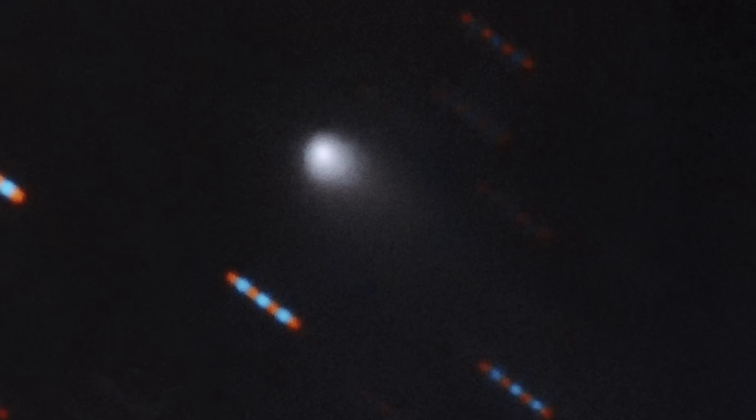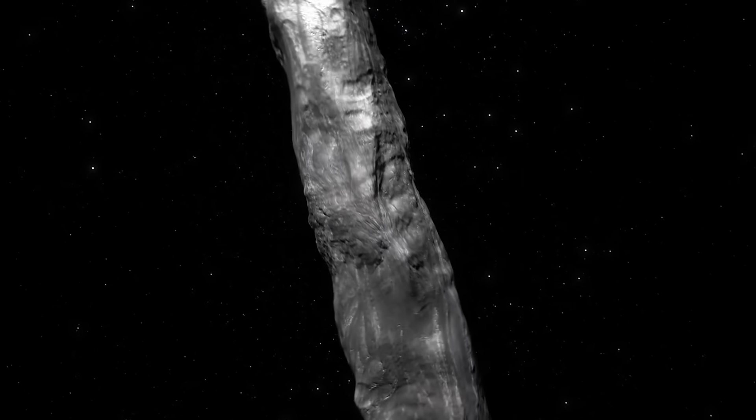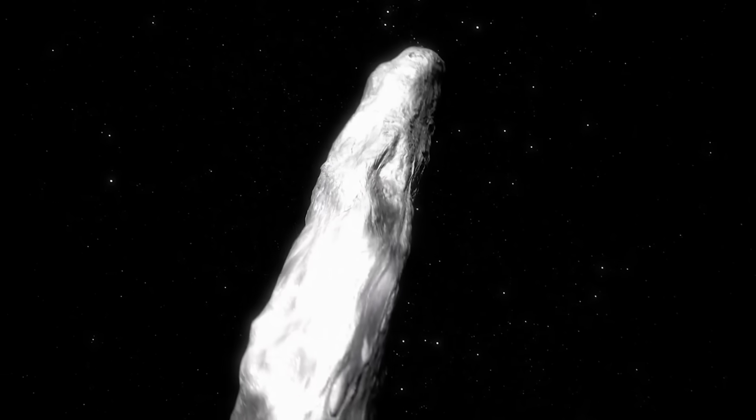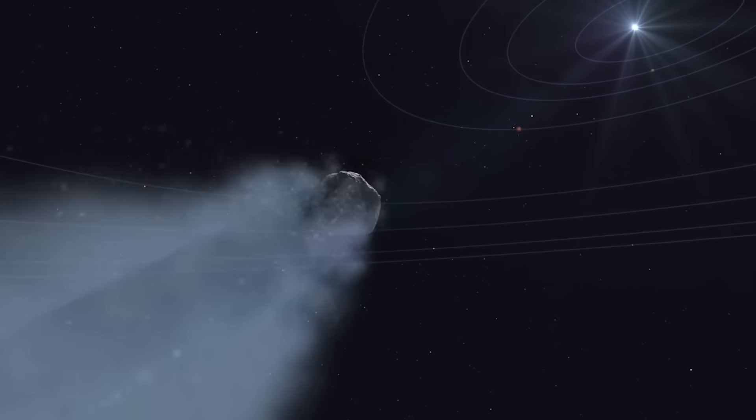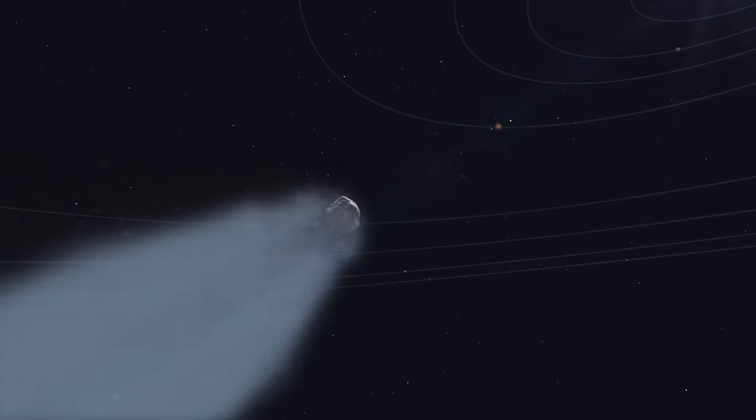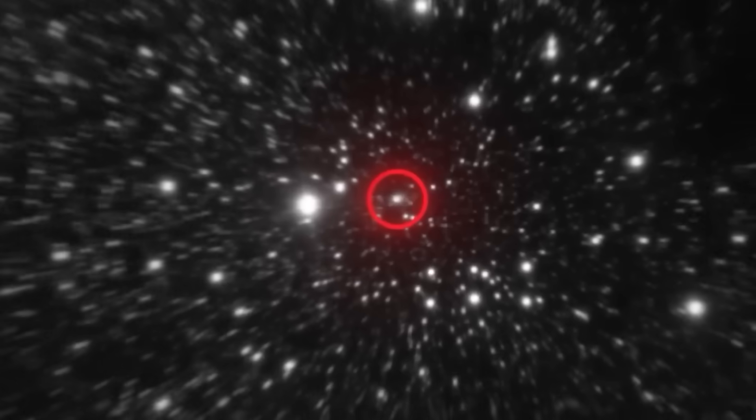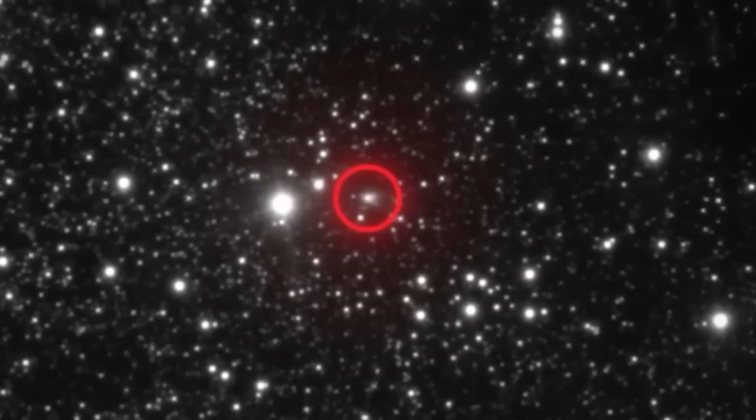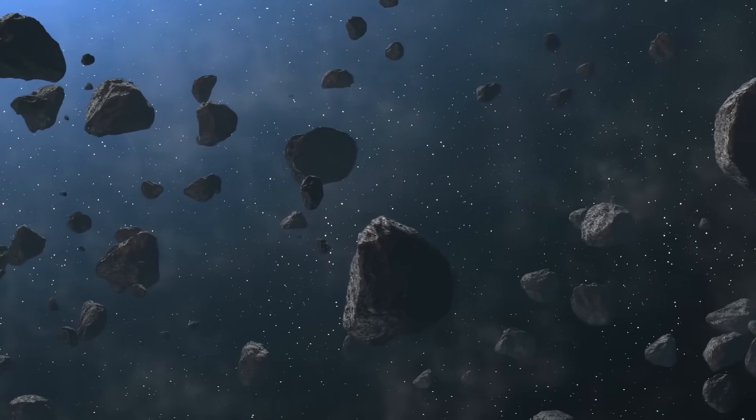So now, let's connect the dots. First, we get a scout, Oumuamua, a bizarre object that looks and moves like a probe. Then, we get Borisov, a more conventional-looking comet, but with a strange, alien composition. And finally, we get Three-Eye Atlas, an object that seems normal at first, but then moves impossibly and sends a cryptic message by self-destructing.